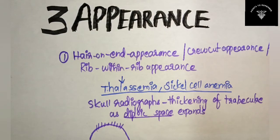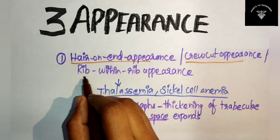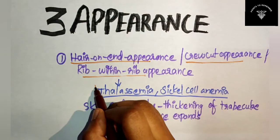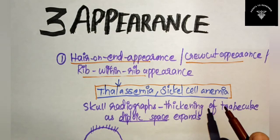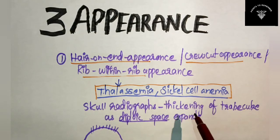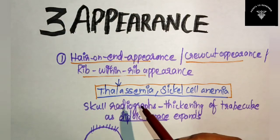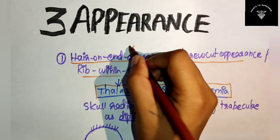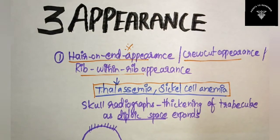When the diploic space expands, there will be thickening of trabeculae, and it appears like long thin vertical striations that resemble hair standing on end. This is known as the hair on end appearance, seen in thalassemia or sickle cell anemia. This is the first important appearance you should remember for your exam.